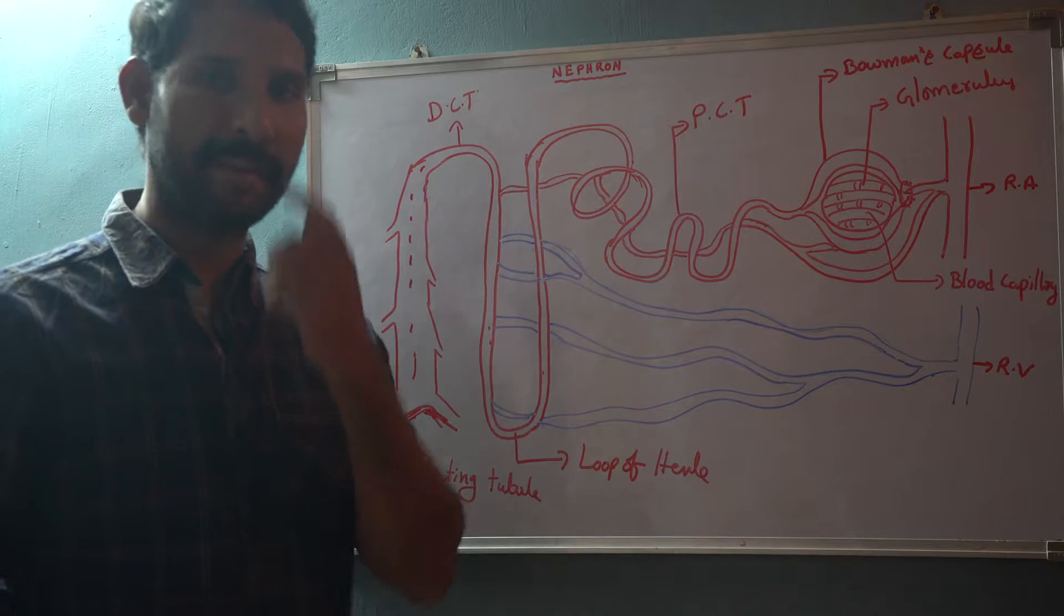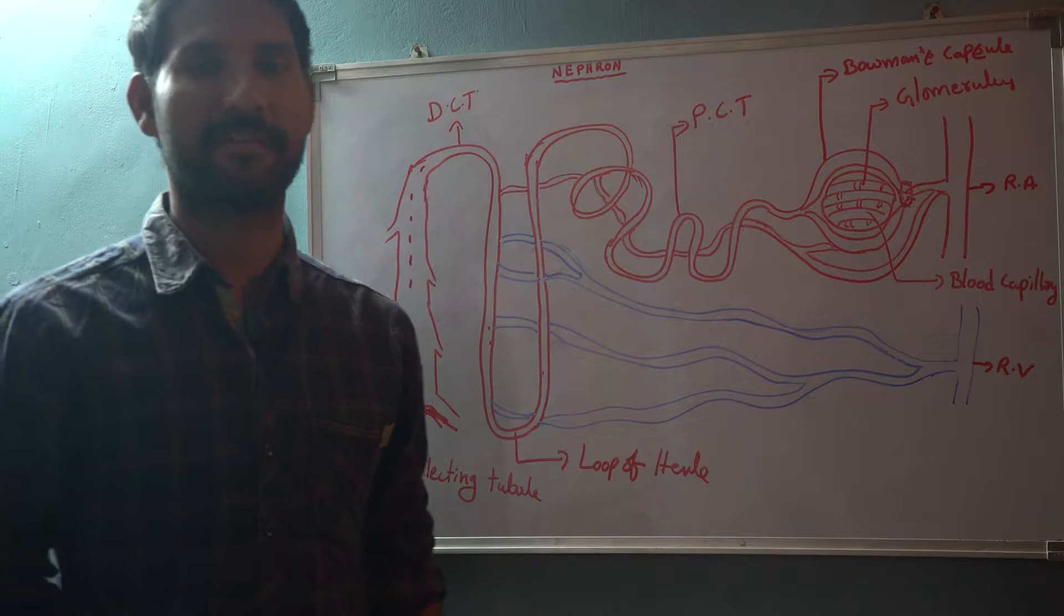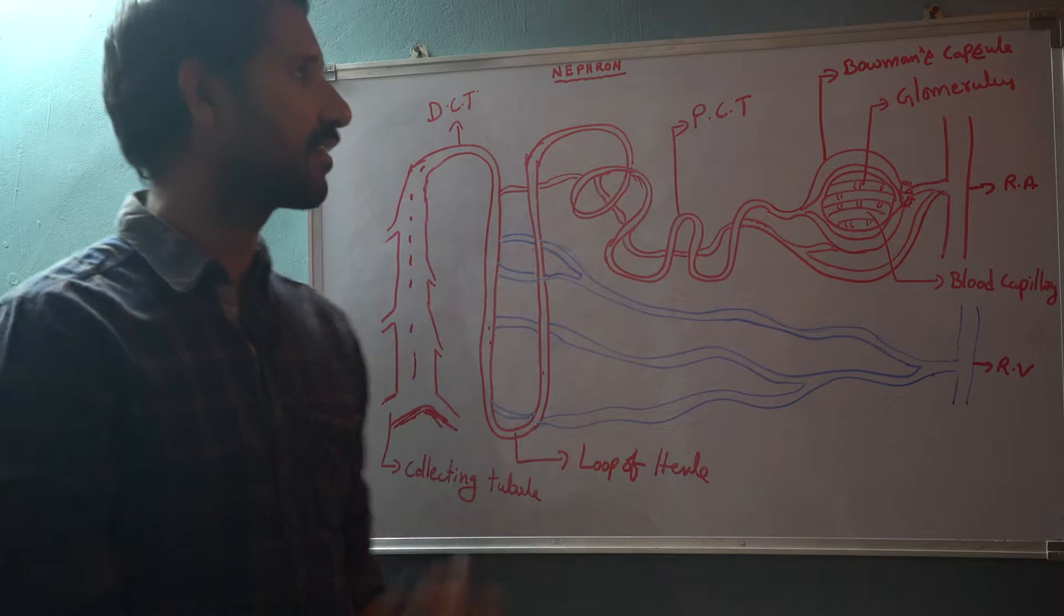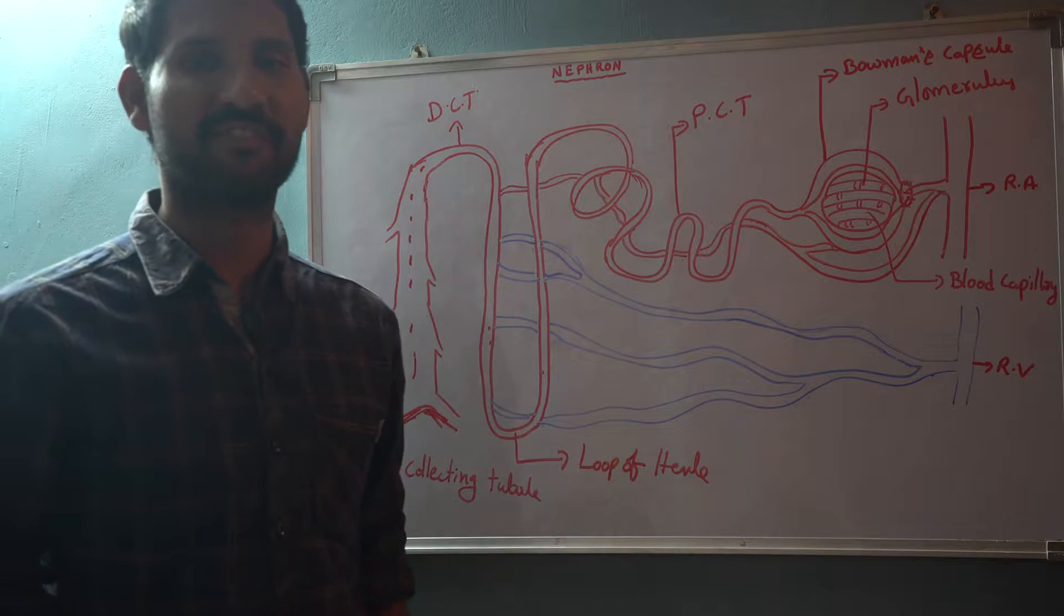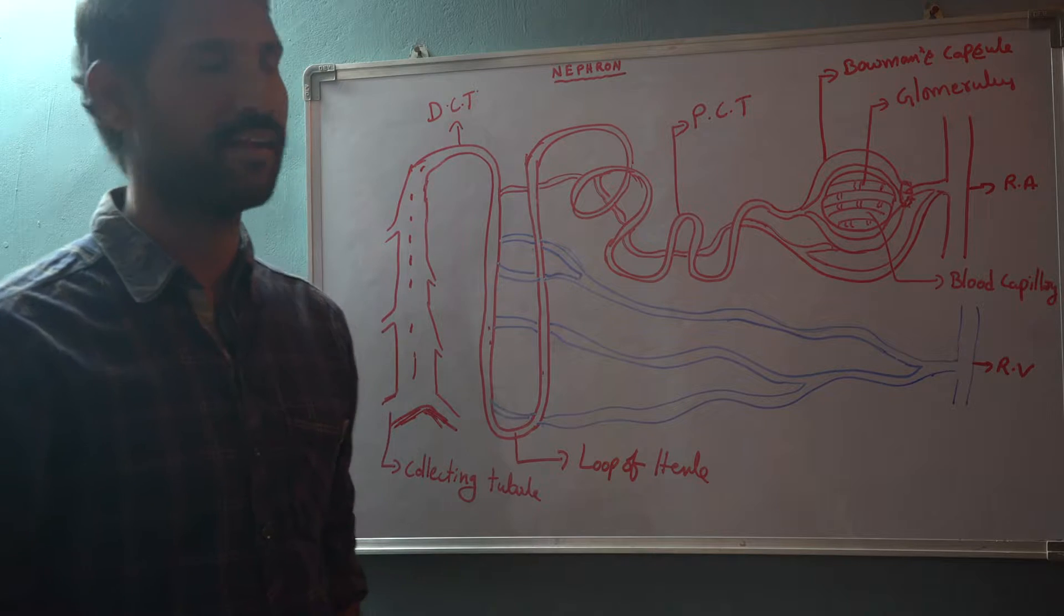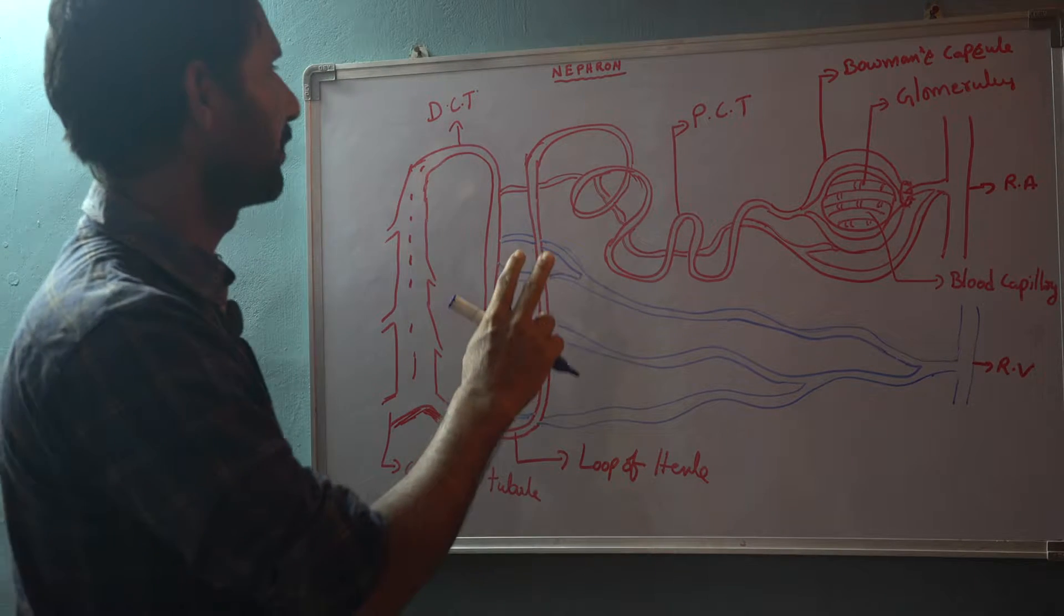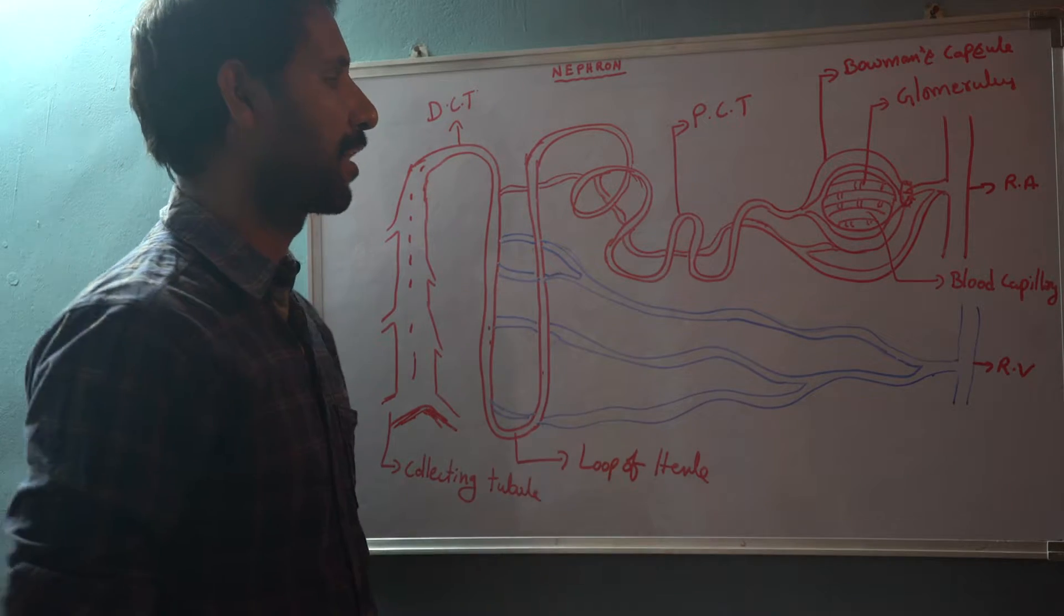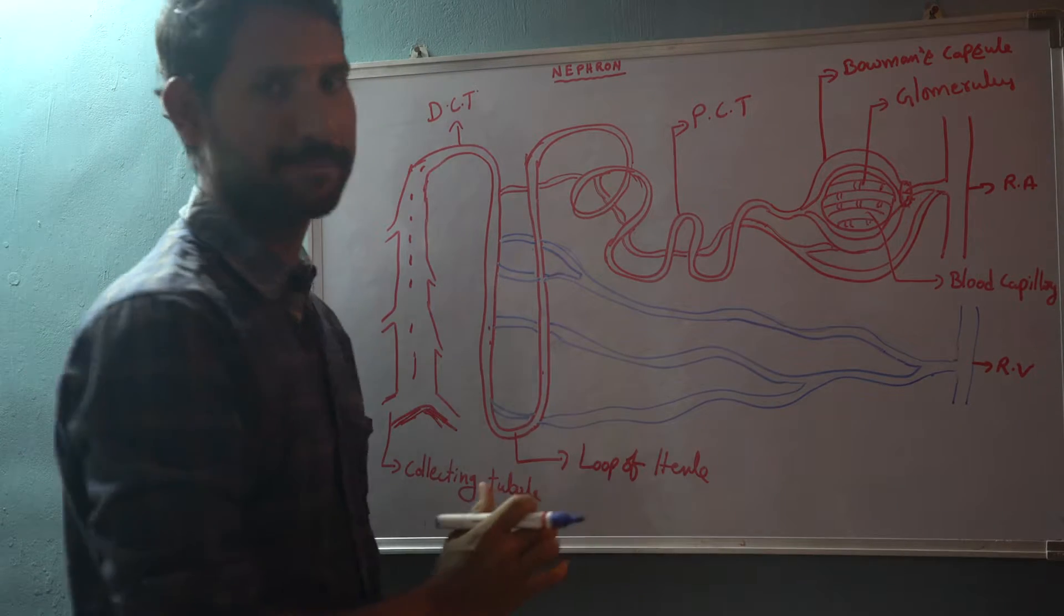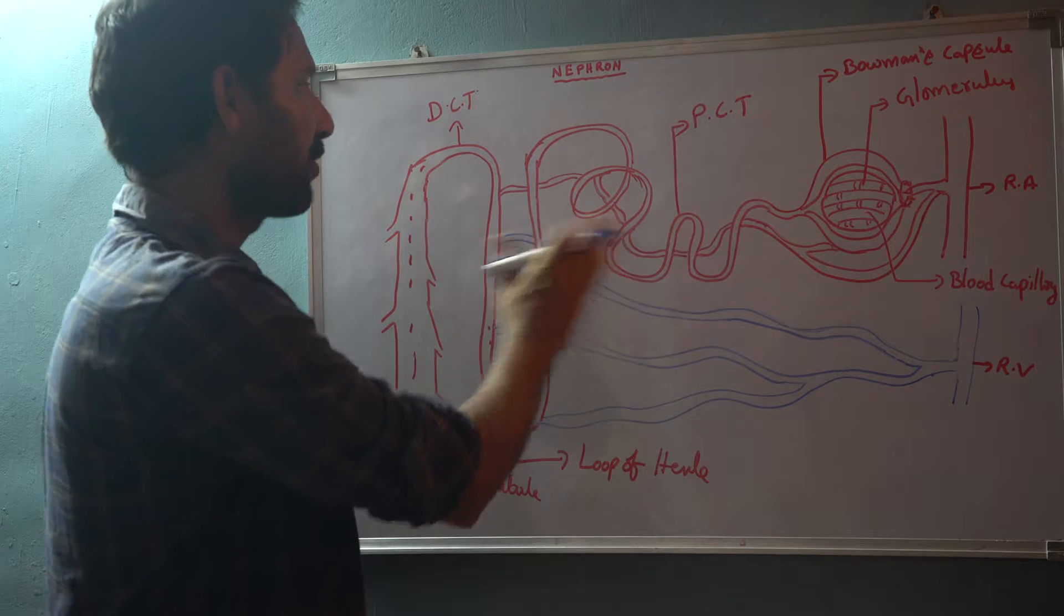There are nearly 10 billion nephrons present in each kidney. Let us see the complex structure of nephron here. The nephron is majorly divided into two parts: one is Bowman's capsule, another is the tubular portion.